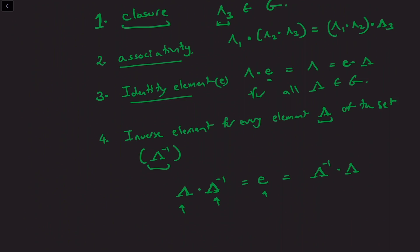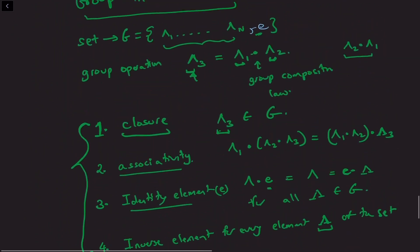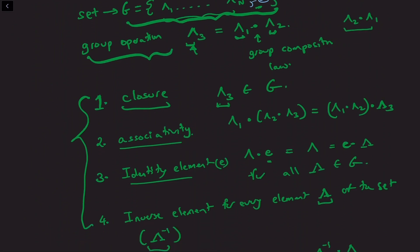So these are the four key properties that the composition law of a group must satisfy. To define a group I need to specify the set and the group operation, and as long as the group operation satisfies these four properties — closure, associativity, identity, and inverse — we can say that the set along with the operation forms a group.